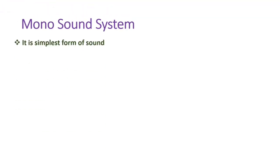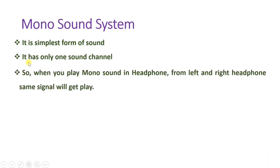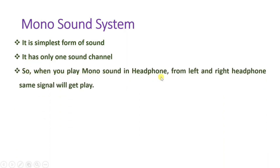Let us begin with the first agenda: mono sound system. In mono sound system there is only a single channel — it is the simplest form of sound system, having only one sound channel. When you play mono sound in headphones, only a single channel is present, and that channel is connected to both the left and right sides of the headphone with the same signal.